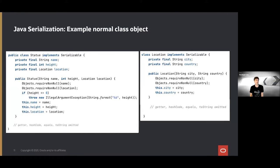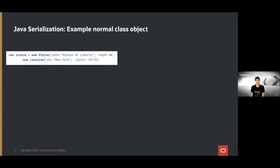Here we have an example Statue class. It has three private final fields: a String name, an int height, and a Location. Location is a small helper class with two strings for city and country. Both classes implement Serializable and both have constructors with invariant checking — we don't want null objects and we don't want the height to be zero or smaller. Boilerplate is omitted and there are no setters because the state should be final.